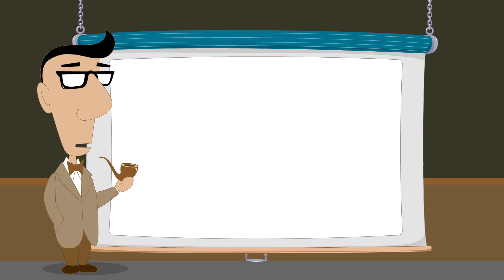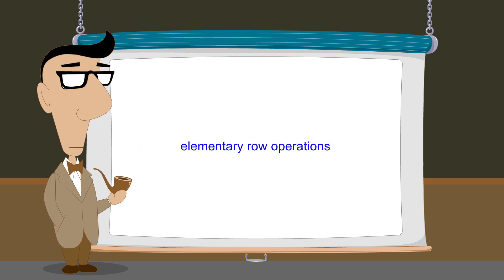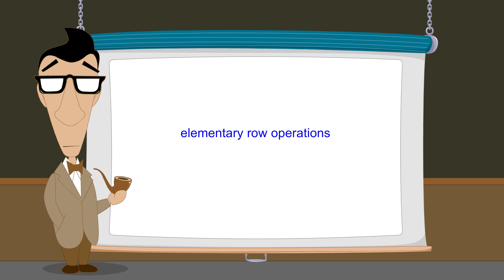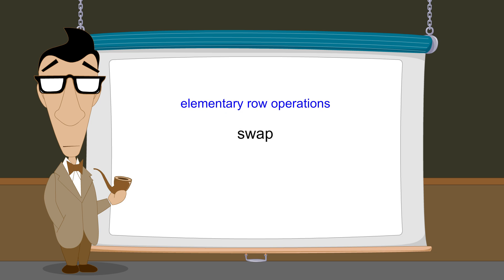We do this by using elementary row operations. There are three types of elementary row operations which we will refer to as swap, scale, and pivot.